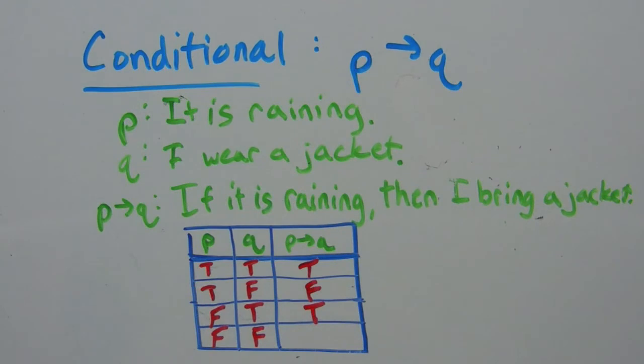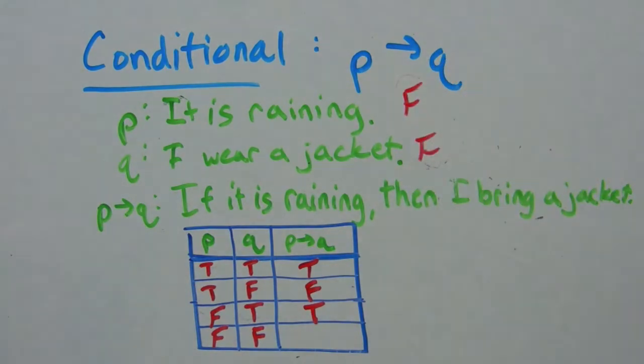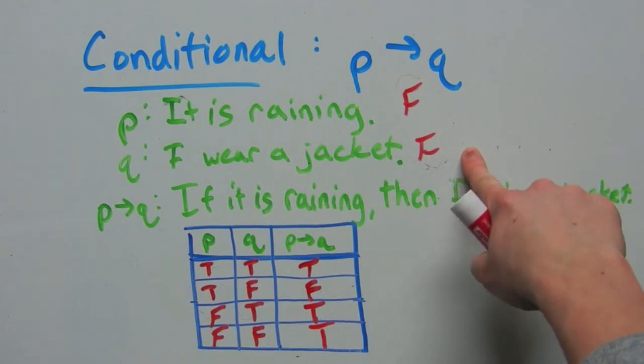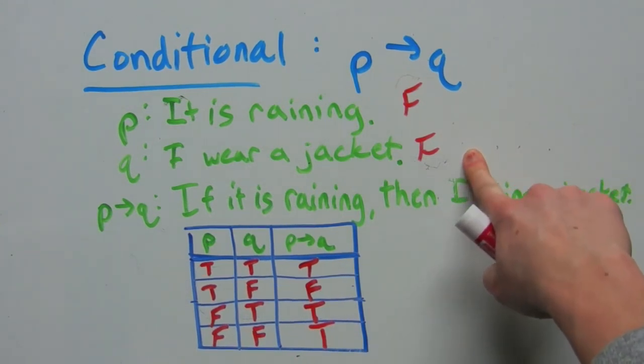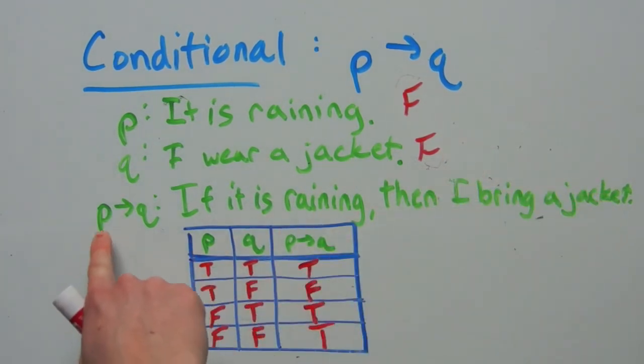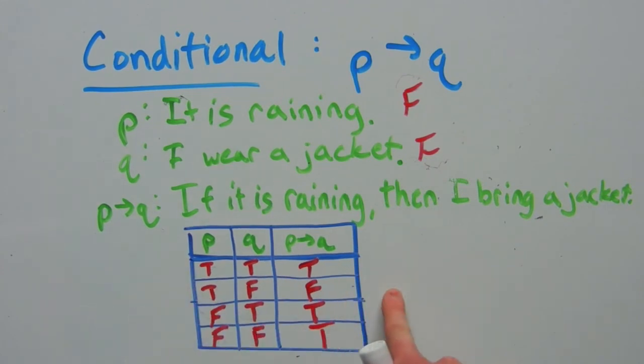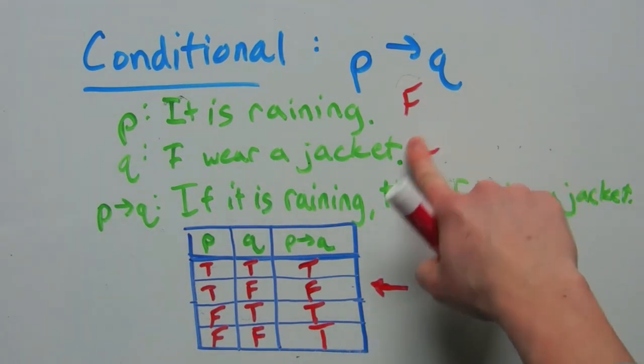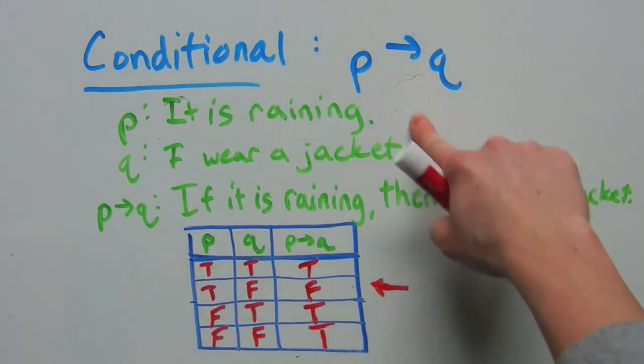And last but not least, both of them are false. It's not raining and I don't wear a jacket. That is true because a false hypothesis can lead to a false conclusion. The only way the conditional P implies Q is not true is in this instance here, and that is because a true hypothesis will never lead to a false conclusion.